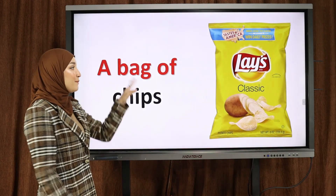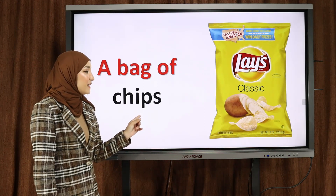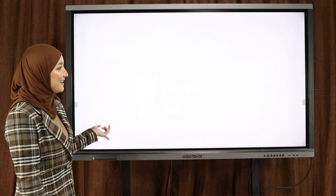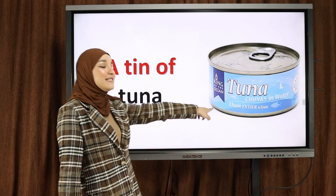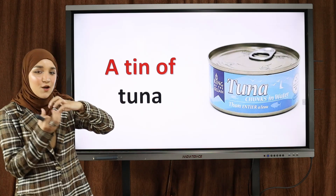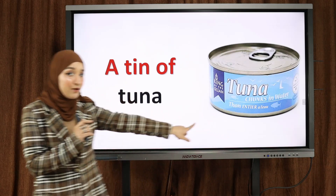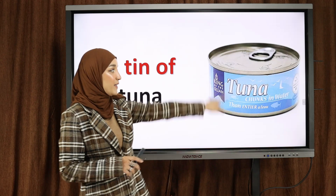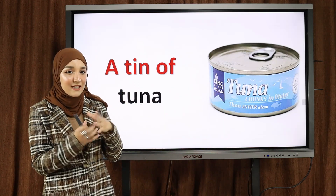A bag of chips — a bag, in this case a bag of chips — كيس من عقائق البطاطة. A tin of tuna — this is a tin. بعض الأطعمة تأتي في معلبات مغلقة, like this one. A tin is like a box made out of metal. So: a tin of tuna.